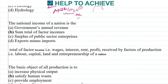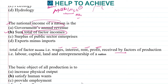Next: the national income of a nation is the sum of total factor incomes. These factor incomes are the wages, interest, rent, and profit received by the factors of production. The factors of production are labor, capital, land, and entrepreneurship.